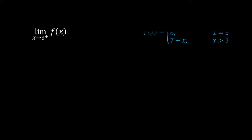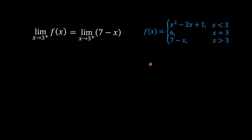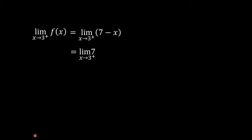Next, the limit of f of x as x approaches 3 from the right equals the limit of the quantity 7 minus x as x approaches 3 from the right. We choose 7 minus x because x is greater than 3 here. This equals 7 minus 3, which equals 4.